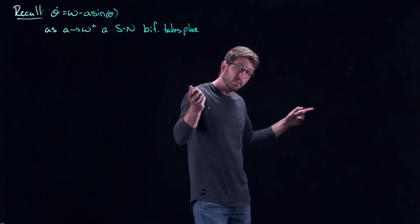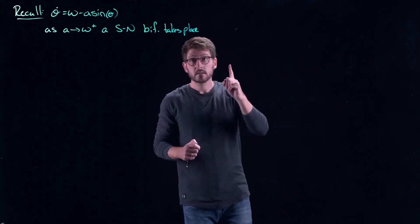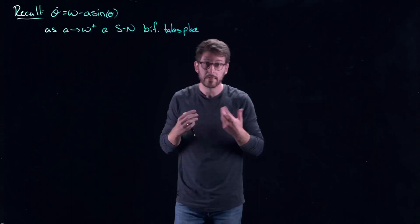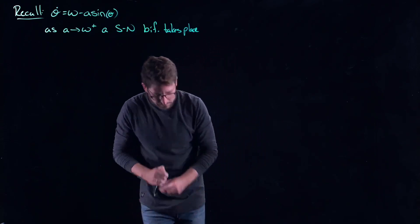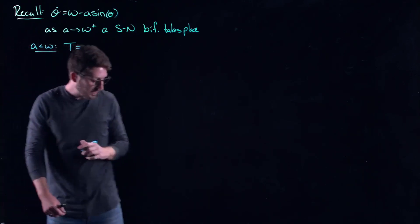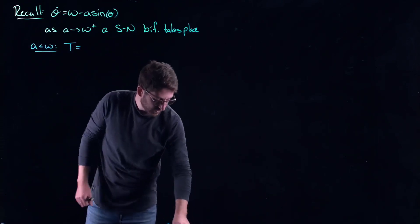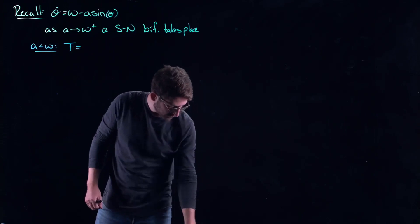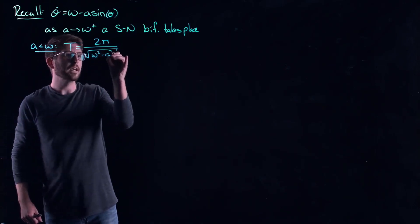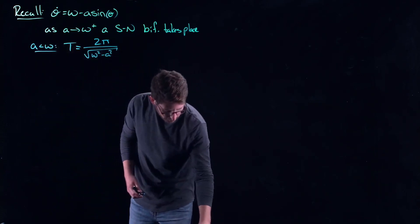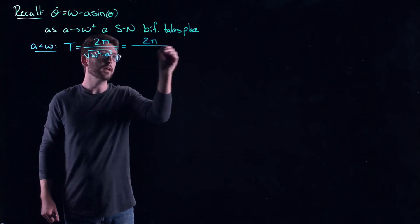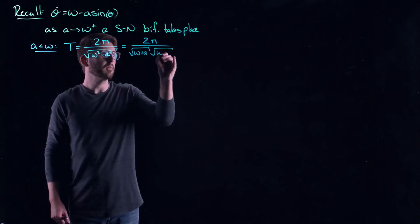What that means is that the floodgates are now open — I can go all the way around the circle completely unimpeded. But if I am slightly below omega with my a value, I'm going to see a little remnant of this bifurcation through a bottleneck. We saw that for a less than omega, the time to go around the circle — time to make one period of oscillation — was given by two pi over the square root of omega squared minus a squared.